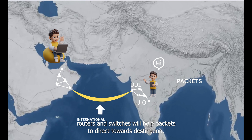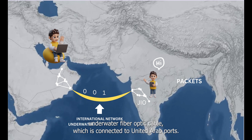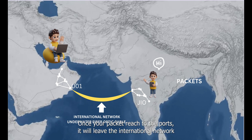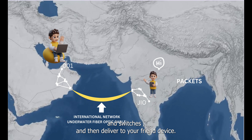Then the packet leaves the Tier 2 zone (local network) and enters the Tier 1 zone — the international network. Your packet travels through the underwater fiber optical cable connected to UAE ports. Once your packet reaches the ports, it leaves the international network and enters the local network again. Finally, it travels through multiple routers and switches and is delivered to your friend's device.